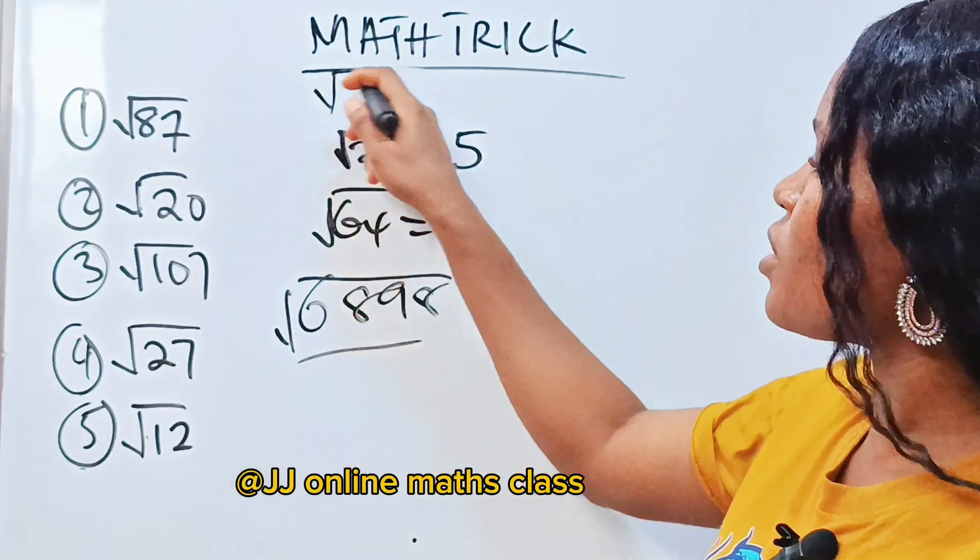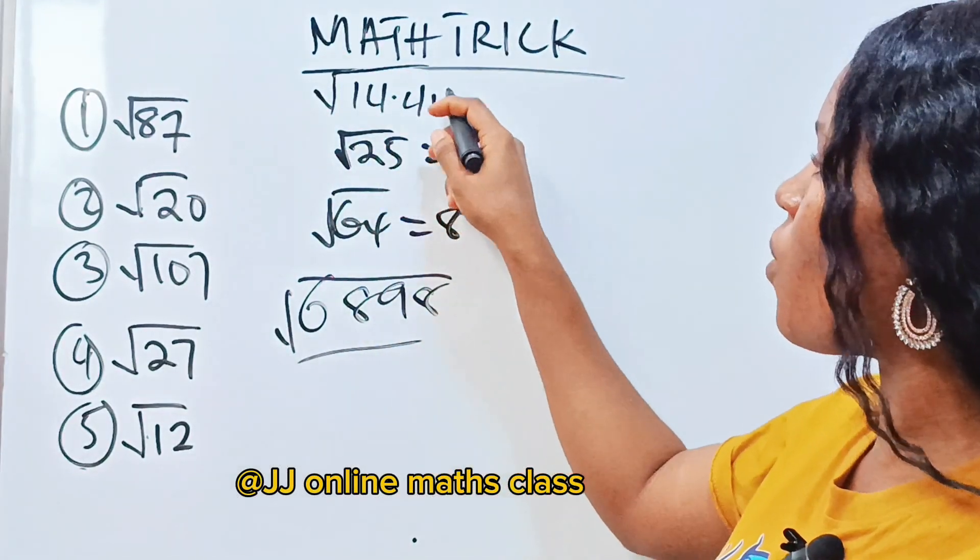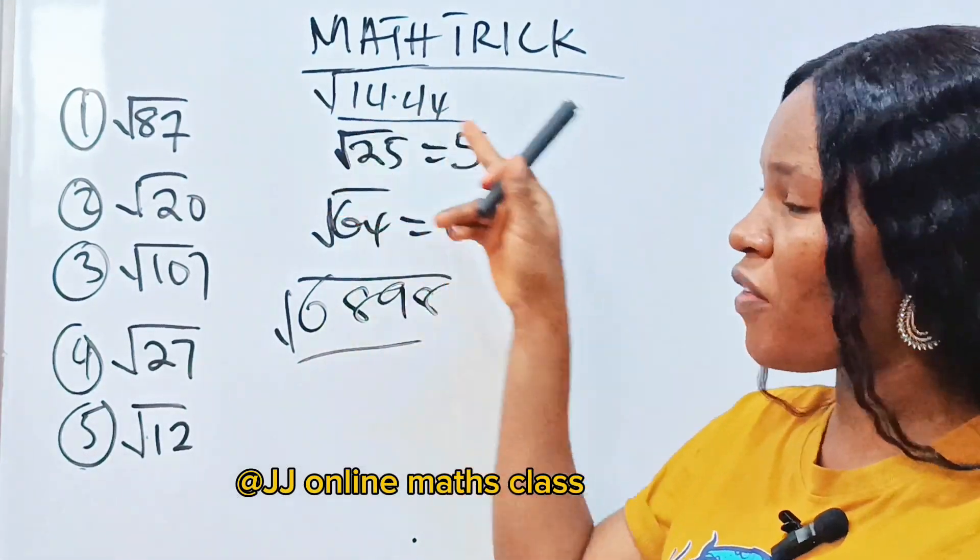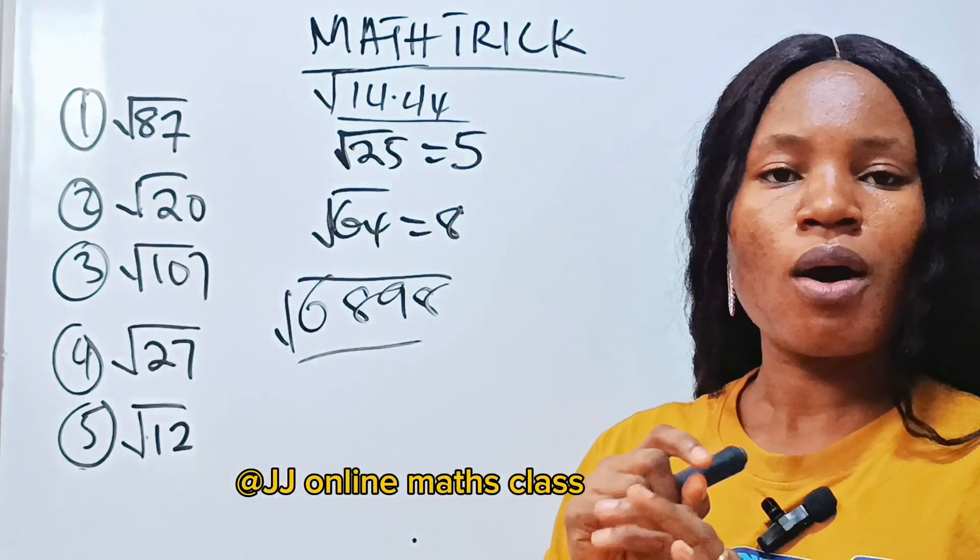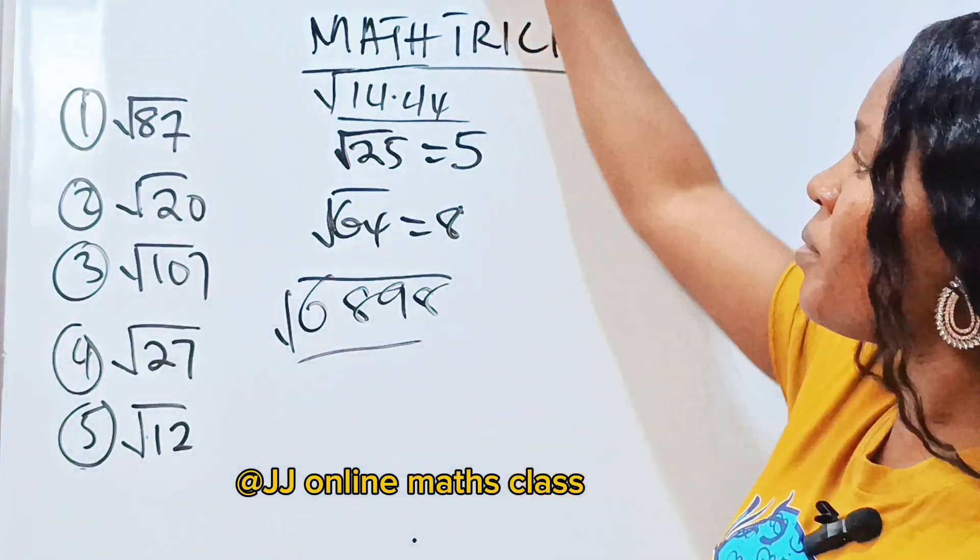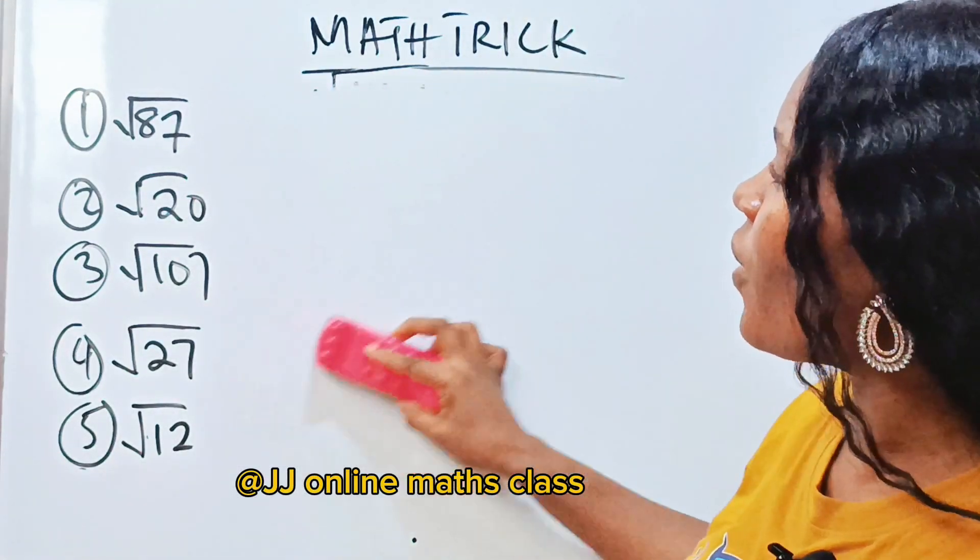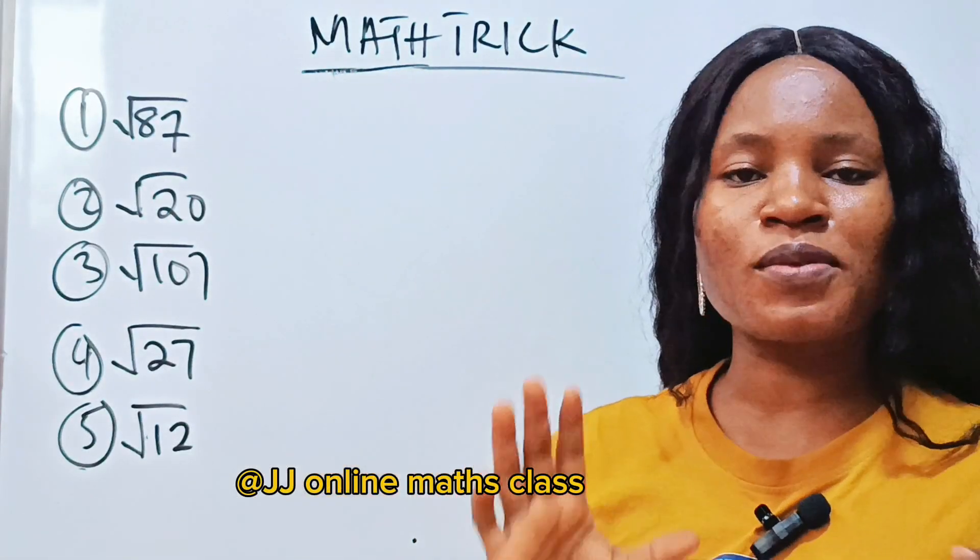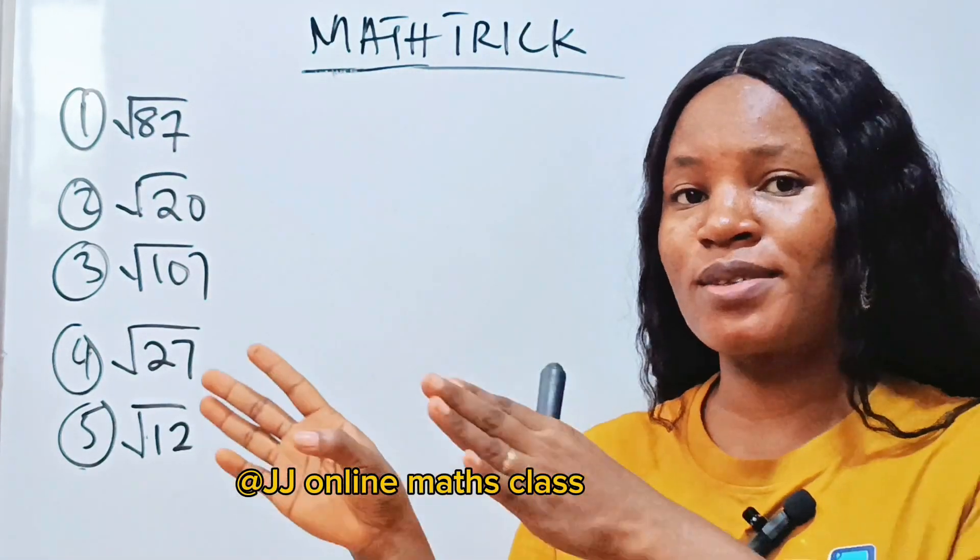If you have something like 14.44, how do you find the square root? Because if this is a perfect square, how do you find the square root without a calculator in 3 seconds? So if you missed that video, I would advise you to check on it. Now today we'll be discussing how to find square root of non-perfect squares.